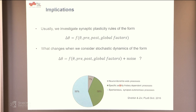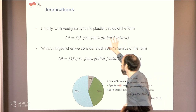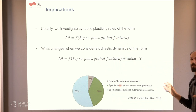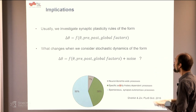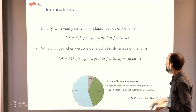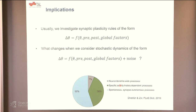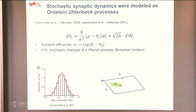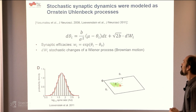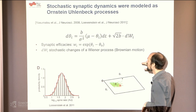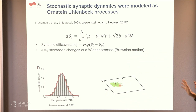The implication is that instead of fitting deterministic learning rules to highly stochastic data, we should consider rules that add noise. Studies by Loewenstein and Yasumatsu looked at changes of spine sizes over time and described them with a stochastic model — an Ornstein-Uhlenbeck process — which fits the data very well.